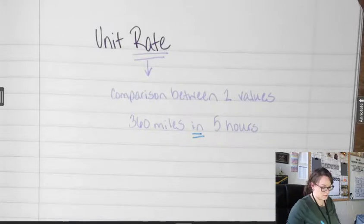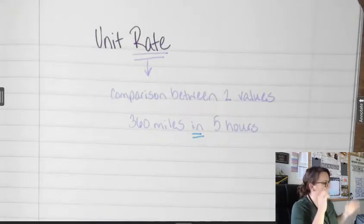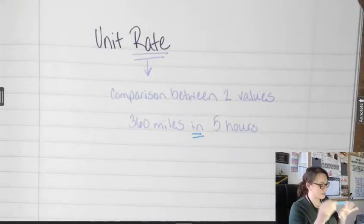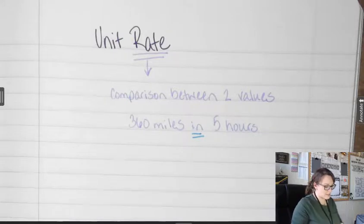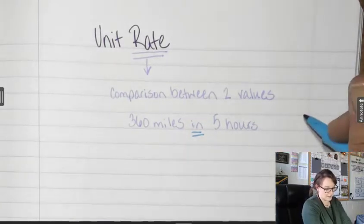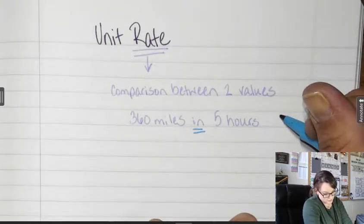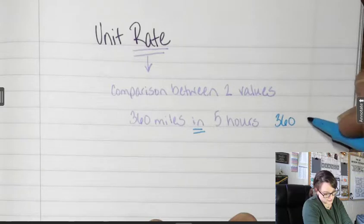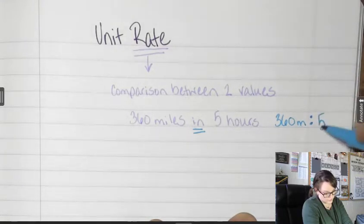That word 'in' is kind of our breaking point. That's our fraction, that's our dots. We can write rates multiple ways. We can write them like this: 360 miles and then two dots, five hours.